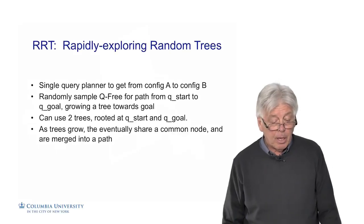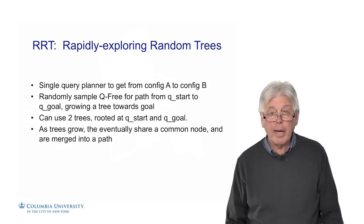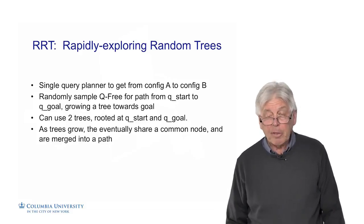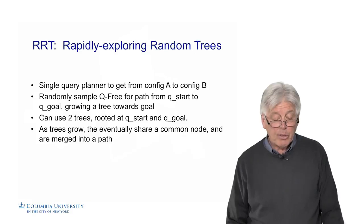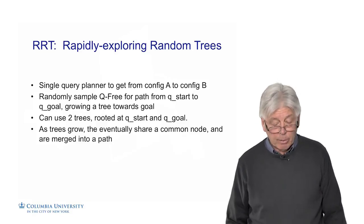Another probabilistic planner is an RRT, a sampling-based planner, rapidly exploring random trees. This is a single query planner to get from configuration A to configuration B. The idea is to randomly sample Q free for a path from Q start to Q goal, growing a tree, not a graph, towards the goal.